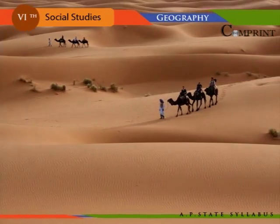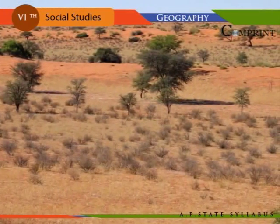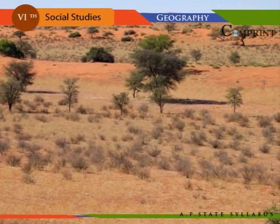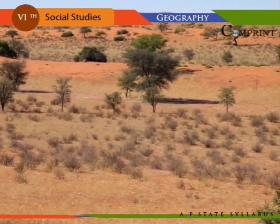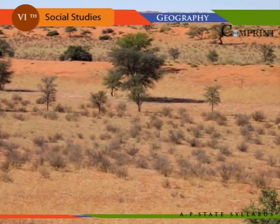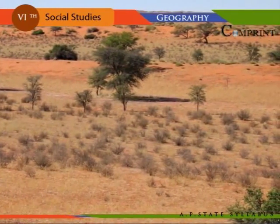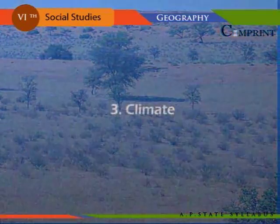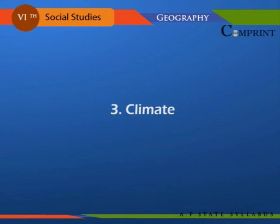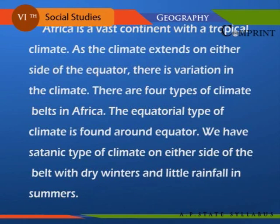The Sahara desert in Africa is the biggest tropical desert in the world. The Kalahari desert extends through Namibia, Botswana, and Angola in the southwest of Africa.